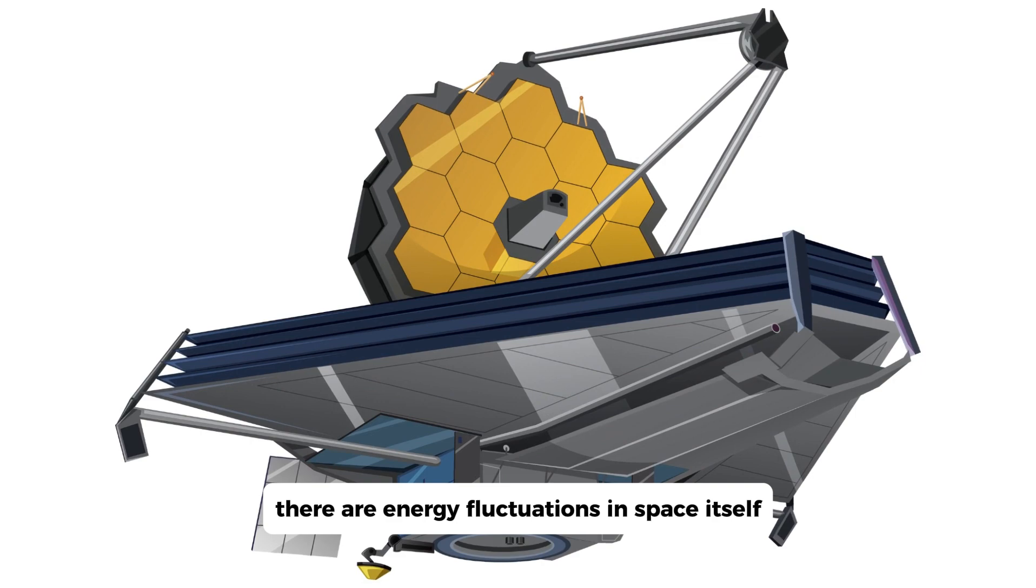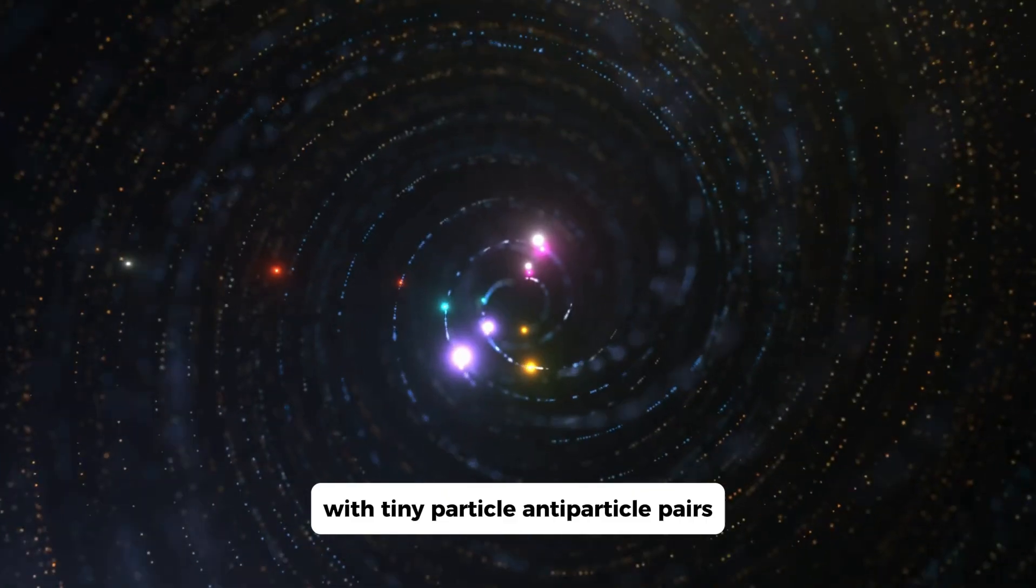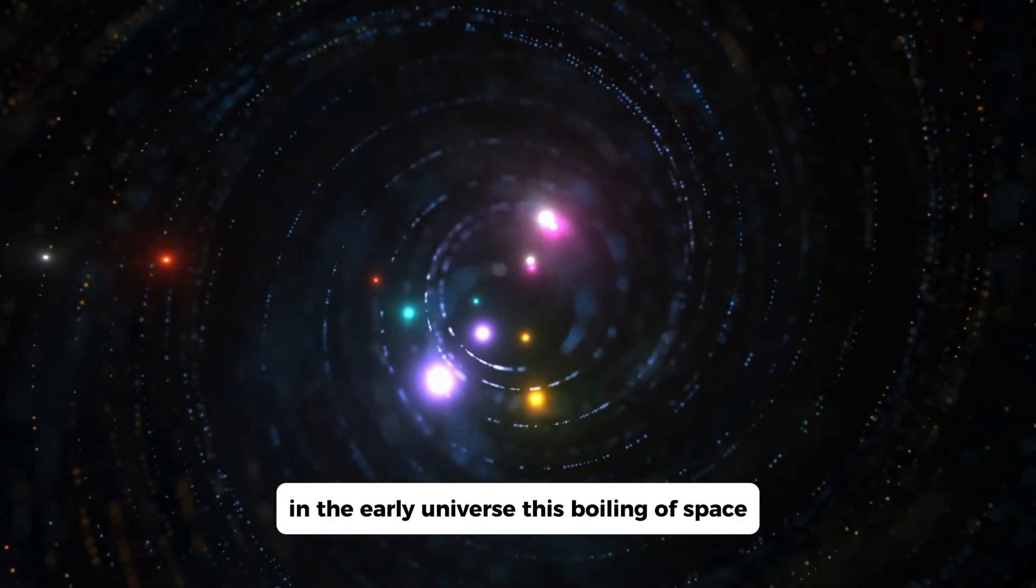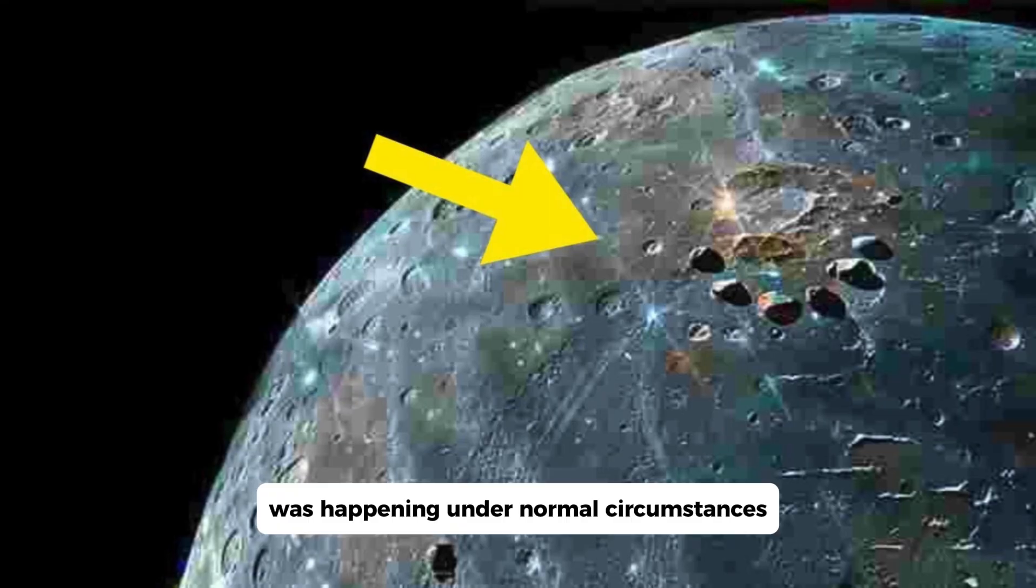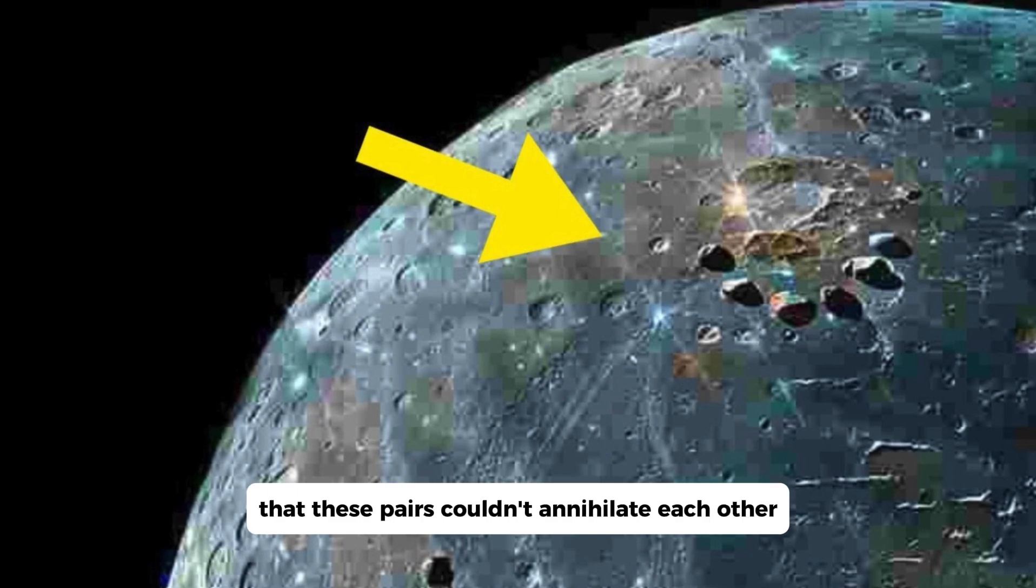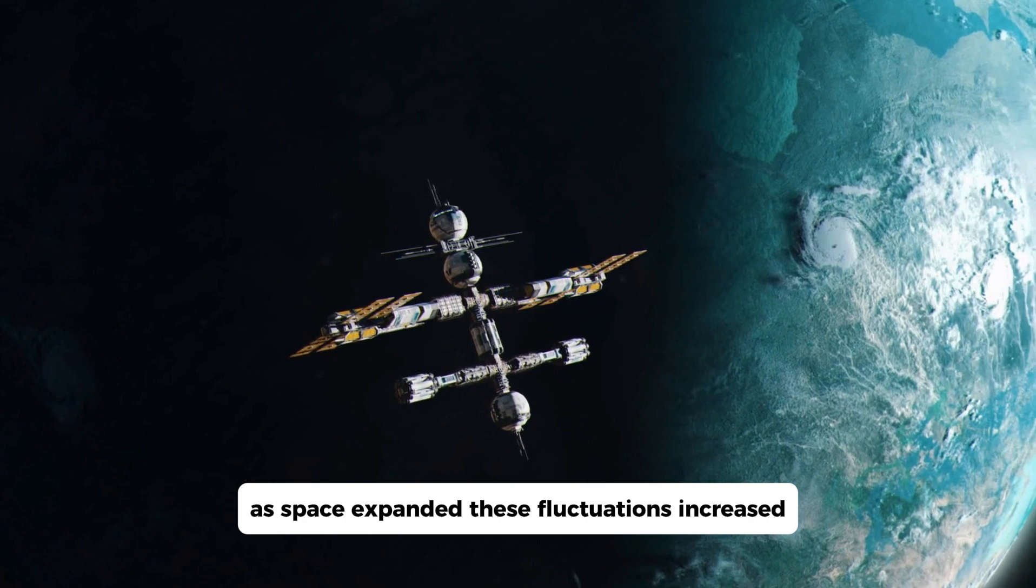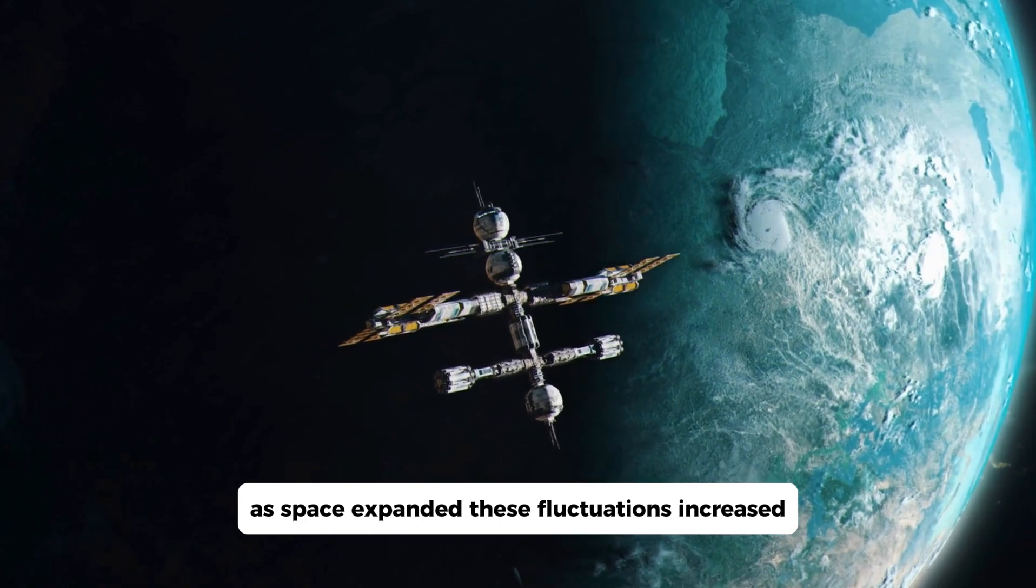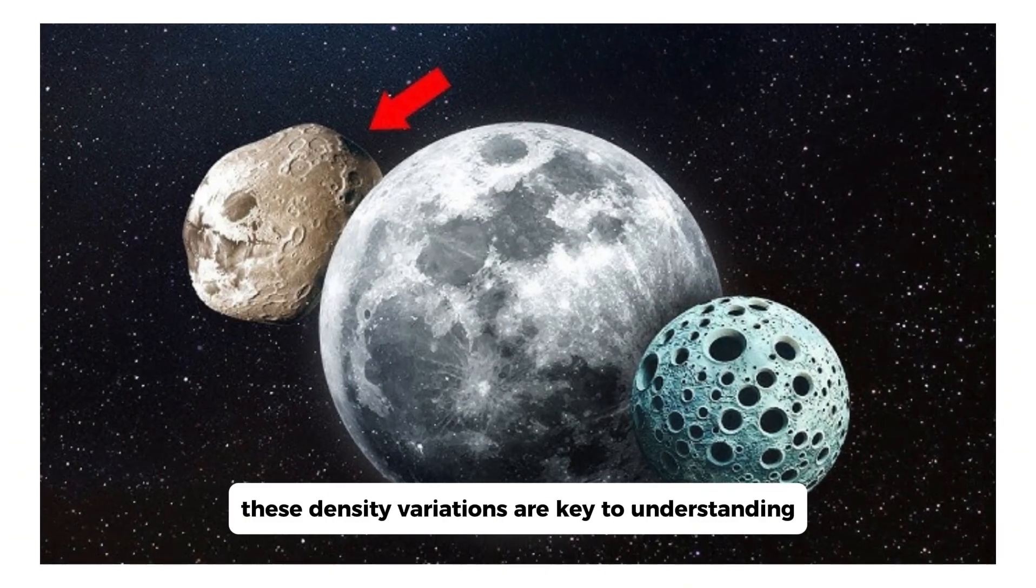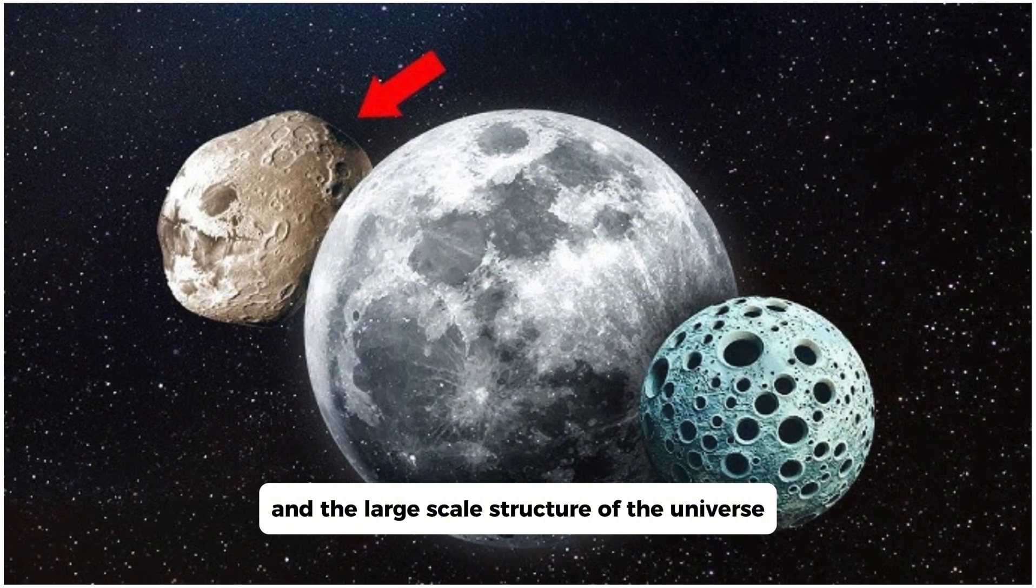It turns out there are energy fluctuations in space itself, with tiny particle-antiparticle pairs continuously forming and annihilating each other in the early universe. This boiling of space was happening under normal circumstances, but the early universe expanded so rapidly that these pairs couldn't annihilate each other. As space expanded, these fluctuations increased, leading to variations in the density of the universe. These density variations are key to understanding how the cosmic web and the large-scale structure of the universe were formed.